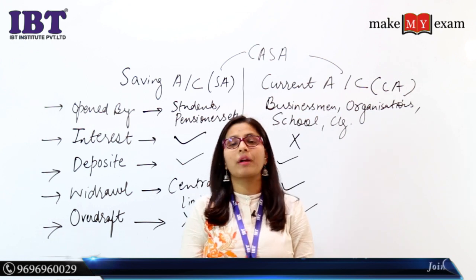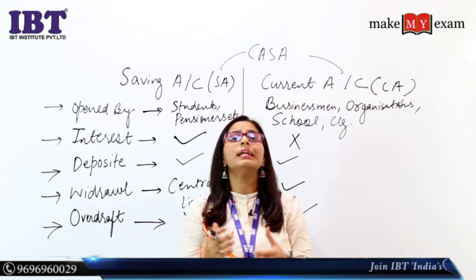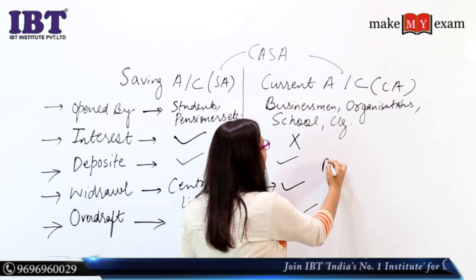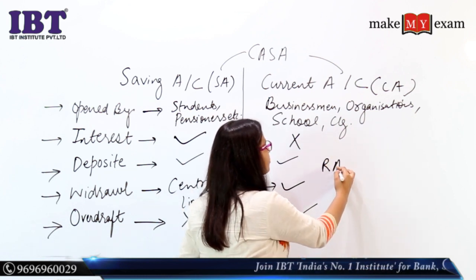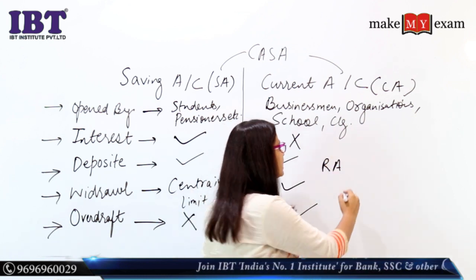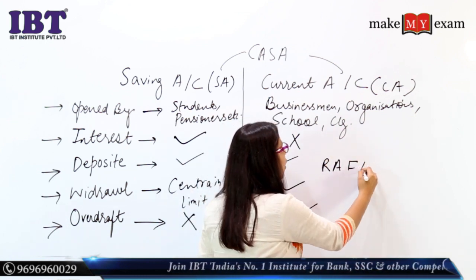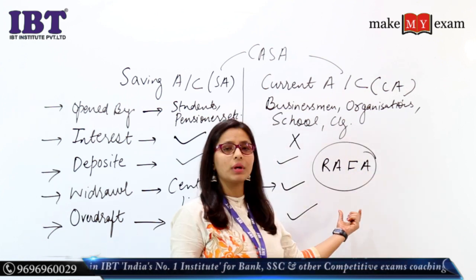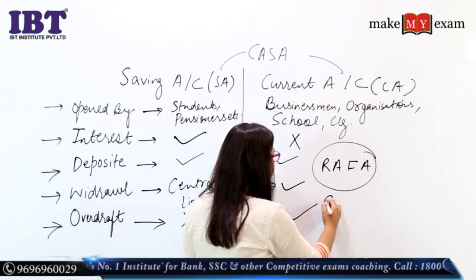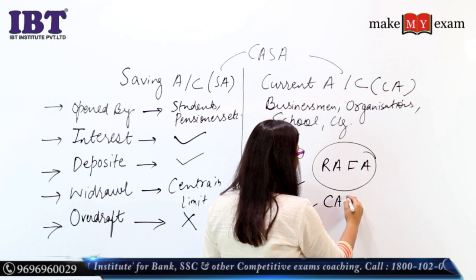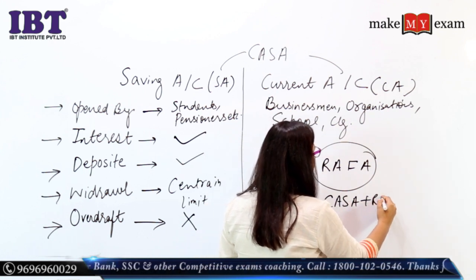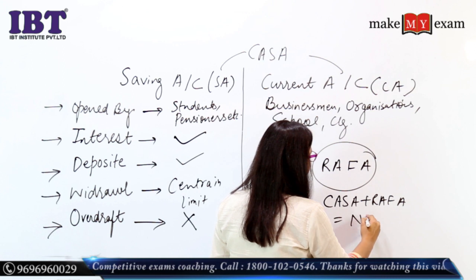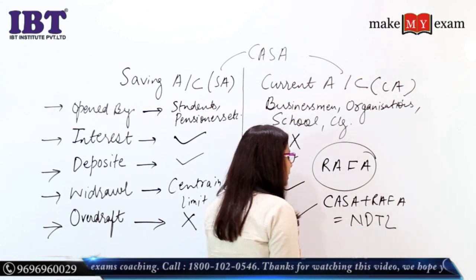When we discuss the next session, we will discuss RD and FD features. RD stands for Recurring Deposit, and FD stands for Fixed Deposit. The combined terminology for these is RAPA, and CASA plus RAPA is equal to NDTL.